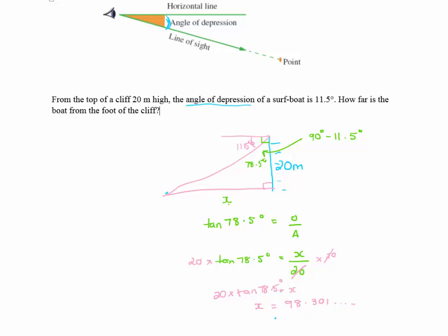So the question says how far is the boat from the foot of the cliff? Well the cliff was given to the nearest meter so I should probably give my answer to the nearest meter. So x equals 98 meters approximately.